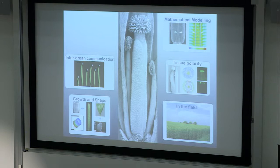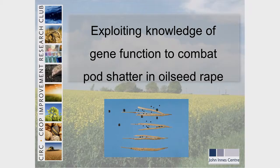One of the examples we have been focused on in this translational effort is to address the issue of pod shatter in oilseed rape. Pod shatter is a process in which the seed pod opens and disperses the seeds. This is extremely important for plants growing in nature to disperse seeds effectively, but it's a very undesirable trait for crops. Farmers of oilseed rape in the UK lose on average 15% of their yield every year due to pod shatter — that equates to about 160 million pounds every year.